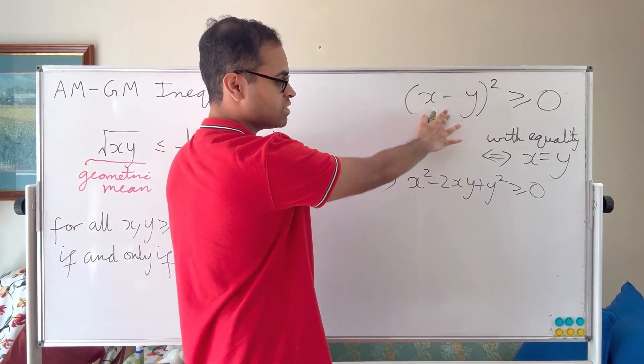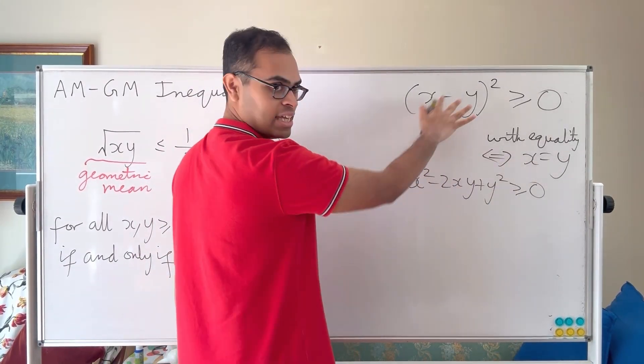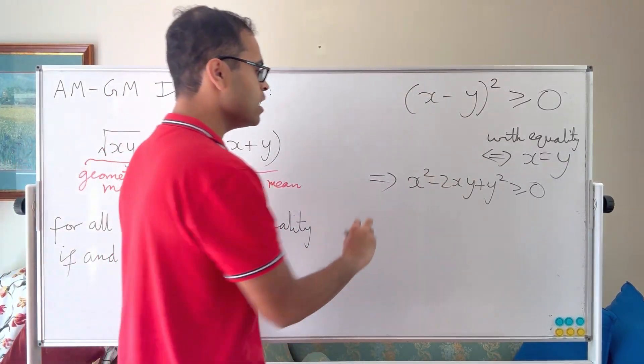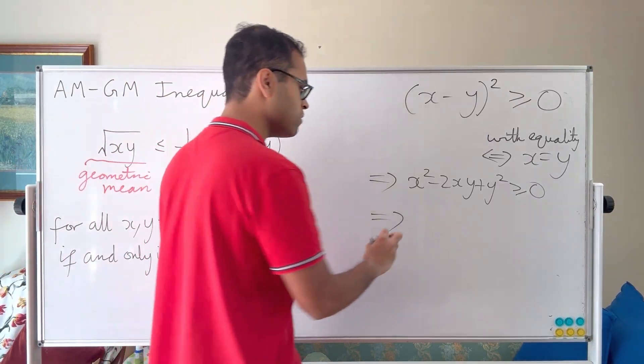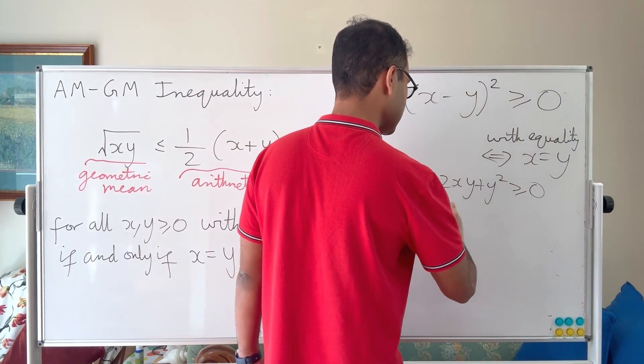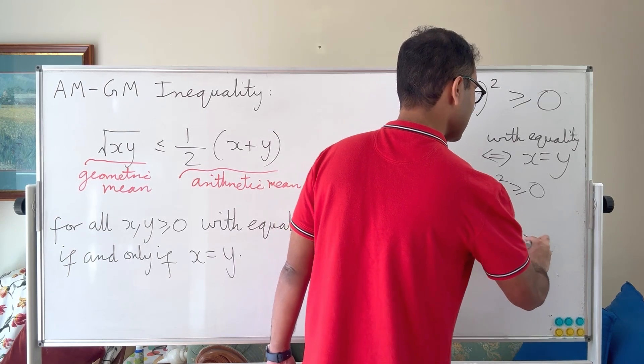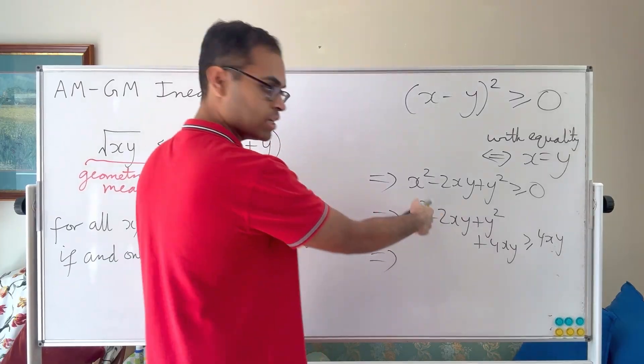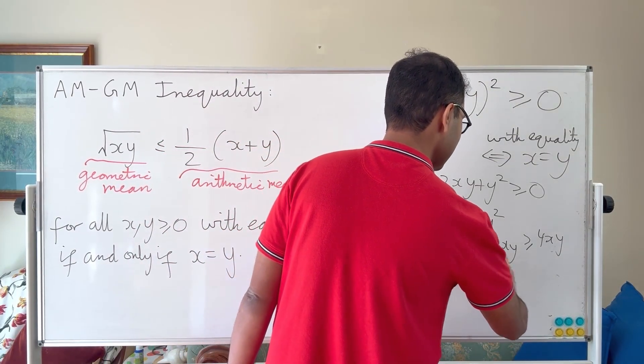It's not entirely obvious by looking at this, but obvious when looking at this form. We're going to keep going with this. We're adding 4xy to both sides, so the inequality is preserved. We get x squared minus 2xy plus y squared plus 4xy is at least 4xy. We can collect the like terms, so we get x squared plus 2xy plus y squared is at least 4xy.